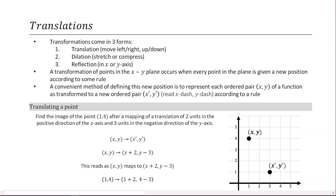Welcome. In this lesson we're going to begin talking about transformations, and the first type we're going to talk about is translations. Transformations come in three forms: translation — move left, right, up, down; dilation — stretch or compress; and reflection in the x or y axis. A transformation of points in the x-y plane occurs when every point in the plane is given a new position according to some rule.